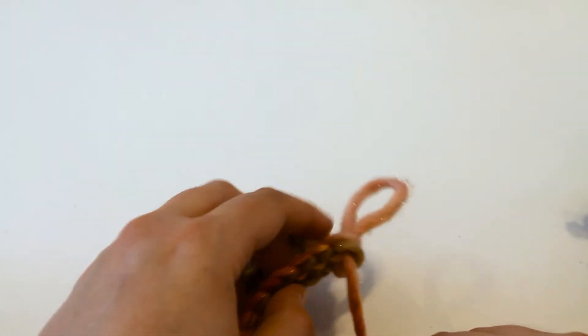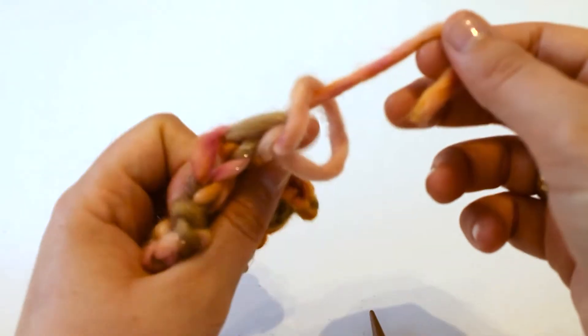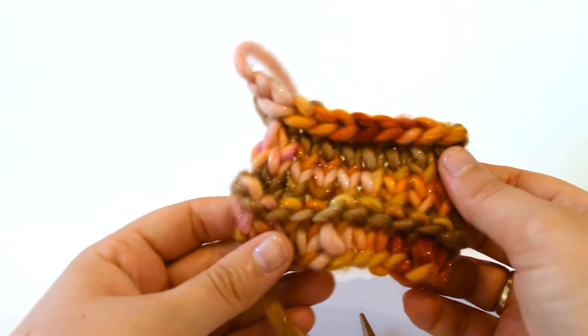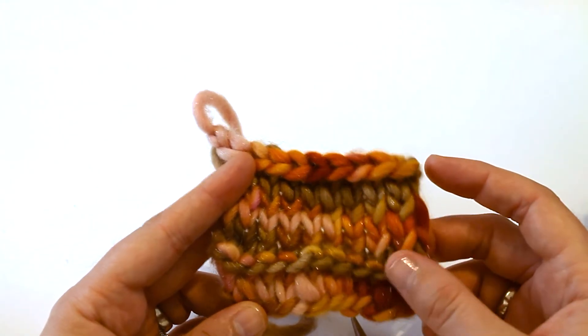So pull your end through that loop. Pull tight. And that is your finished work, whatever you've knitted. In this case a tiny mixed square of stocking and garter stitch.